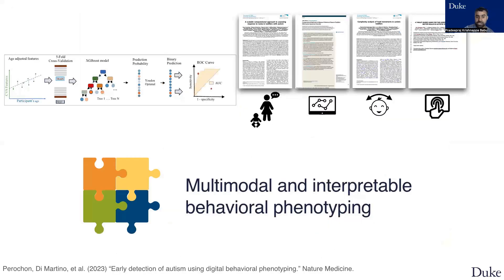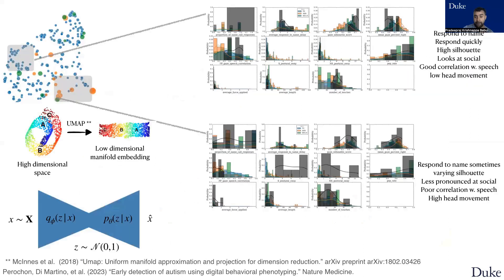Subsequently, we use these behavioral features by age-adjusting using linear regression and feeding them into an XGBoost model to predict autism. The classified data can be explained using data distribution via UMAP. For example, the data on the right bottom is highly concentrated with autism predictions while the other side is concentrated with neurotypical kids.